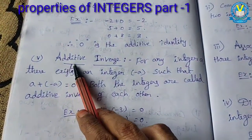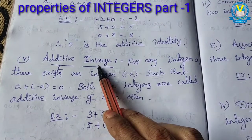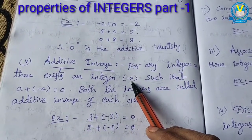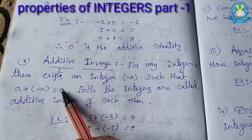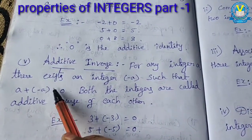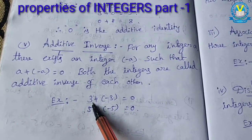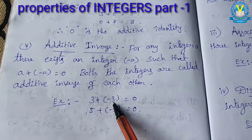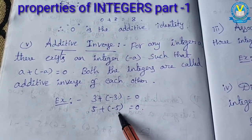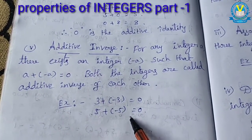The fifth and last one is additive inverse. For any integer A, there exists an integer minus A. Additive inverse means opposite — positive A and negative A are opposites. Such that A plus minus A equals 0. Both integers are called additive inverse of each other. A is the additive inverse of minus A, and minus A is the additive inverse of A. For example, 3 is a positive integer and minus 3 is a negative integer — 3 plus minus 3 equals 0. Similarly, 5 plus minus 5 equals 0. Both are additive inverses of each other.